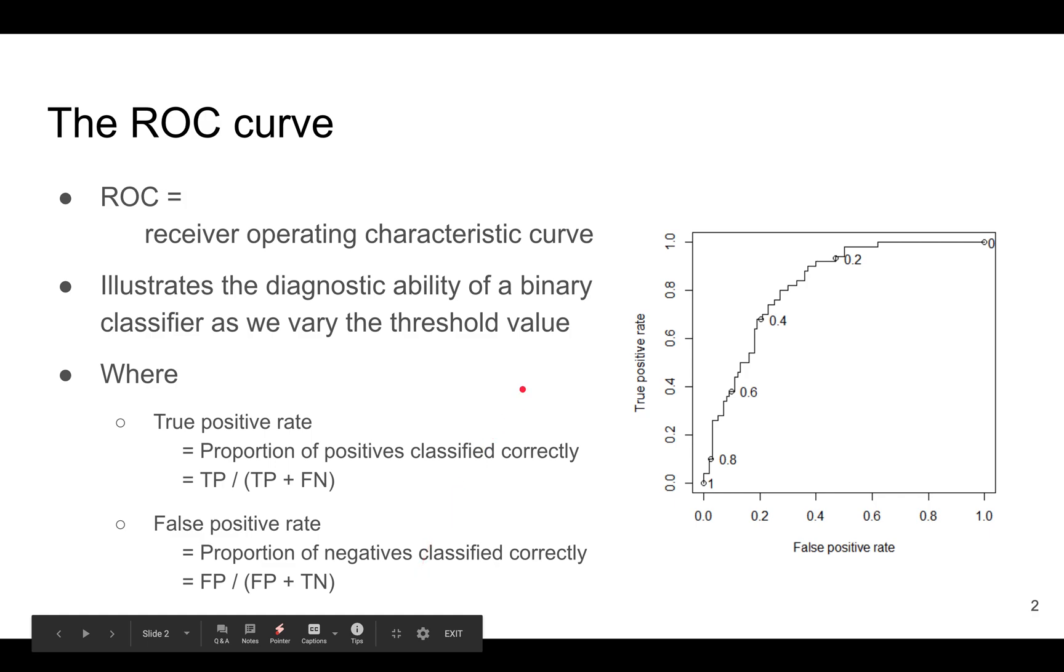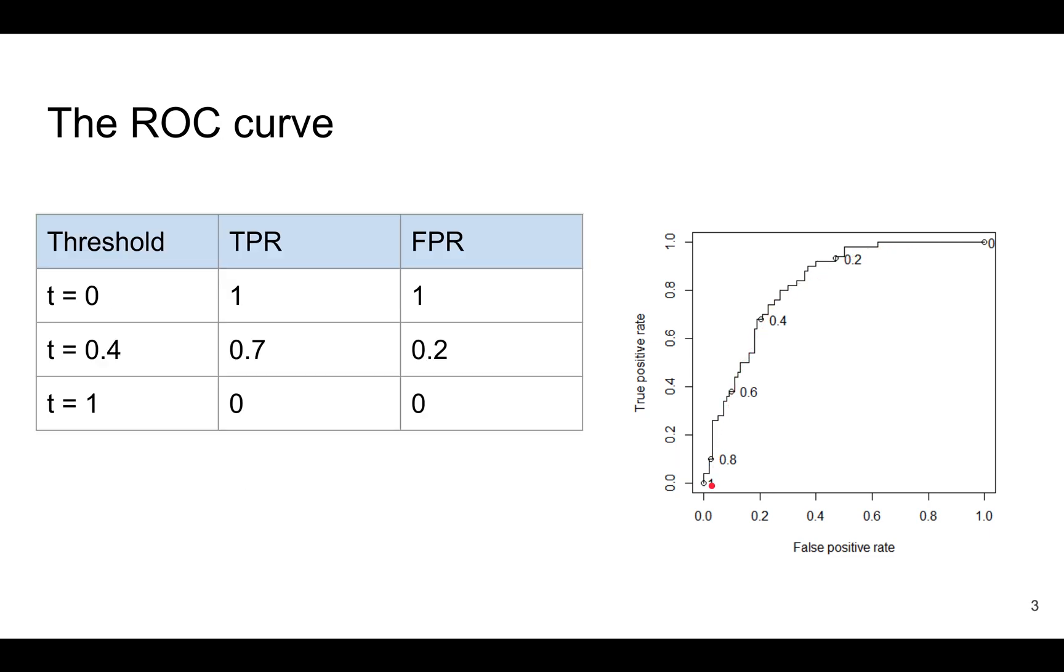As we change the threshold value, the true positive rate and the false positive rate changes. For example, 0, 0.2, 0.4, 0.6, 0.8 and 1. Let's look at three examples. If the threshold is 0, the true positive rate and the false positive rate is 1, and that's because every observation is predicted to be positive. And on the opposite side, when the threshold is 1, every observation is predicted to be negative, so the false positive and the true positive rate is both 0.